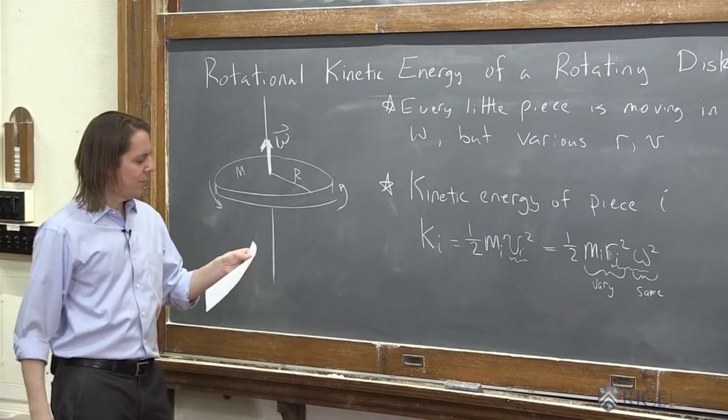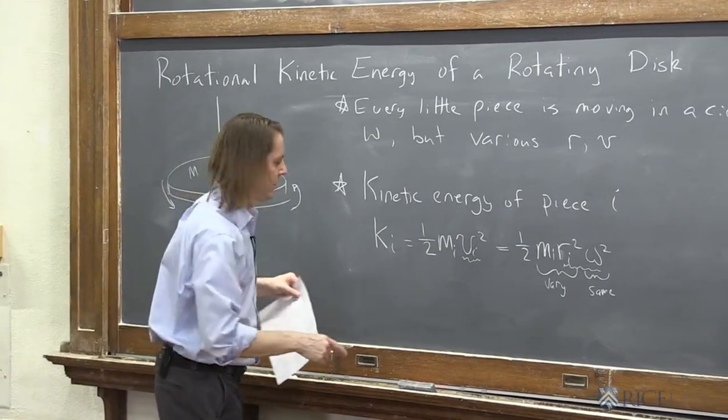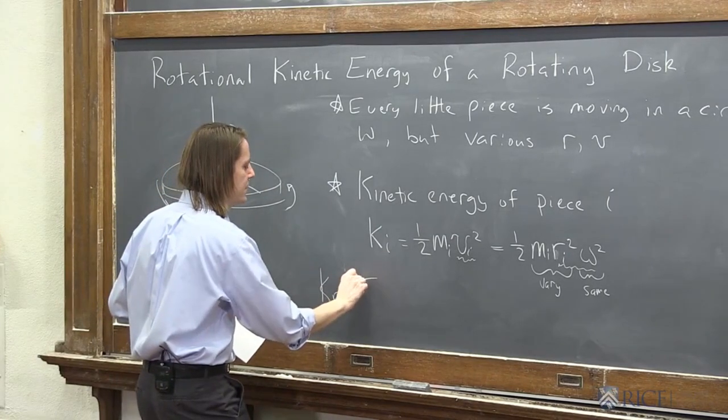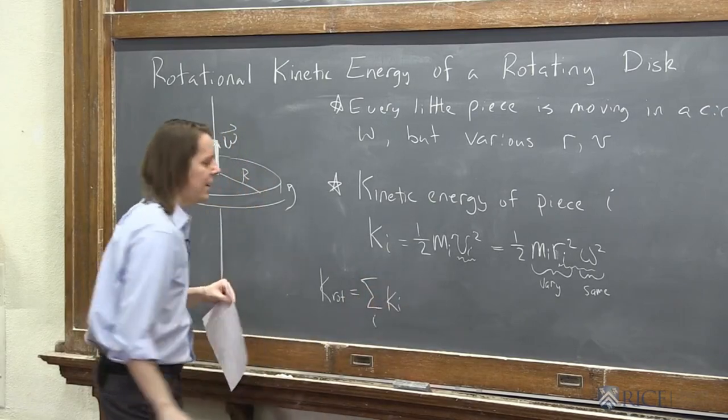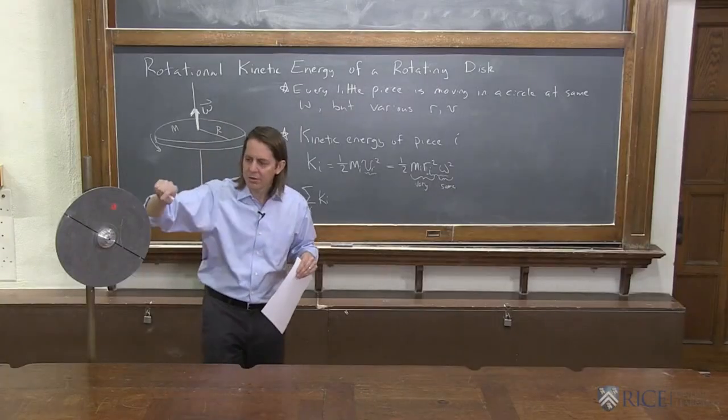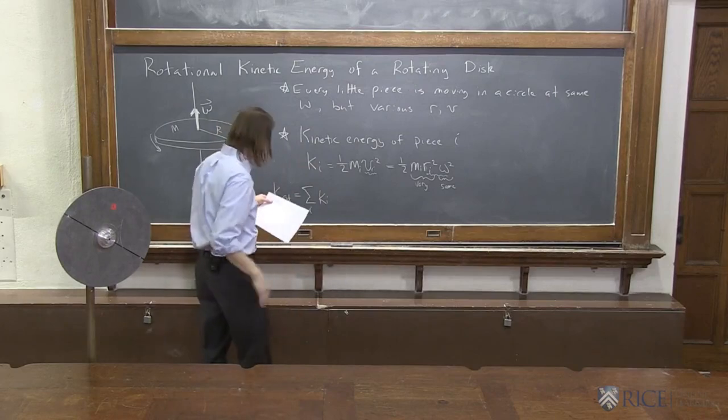So if we look at this formula, then we might say, now all we've got to do is add up all the k_i's. If we want the total, if we want k rotation, we just add up sum over all the i's, the k_i's for every little piece. Let's do it theoretically. It would be a little faster.